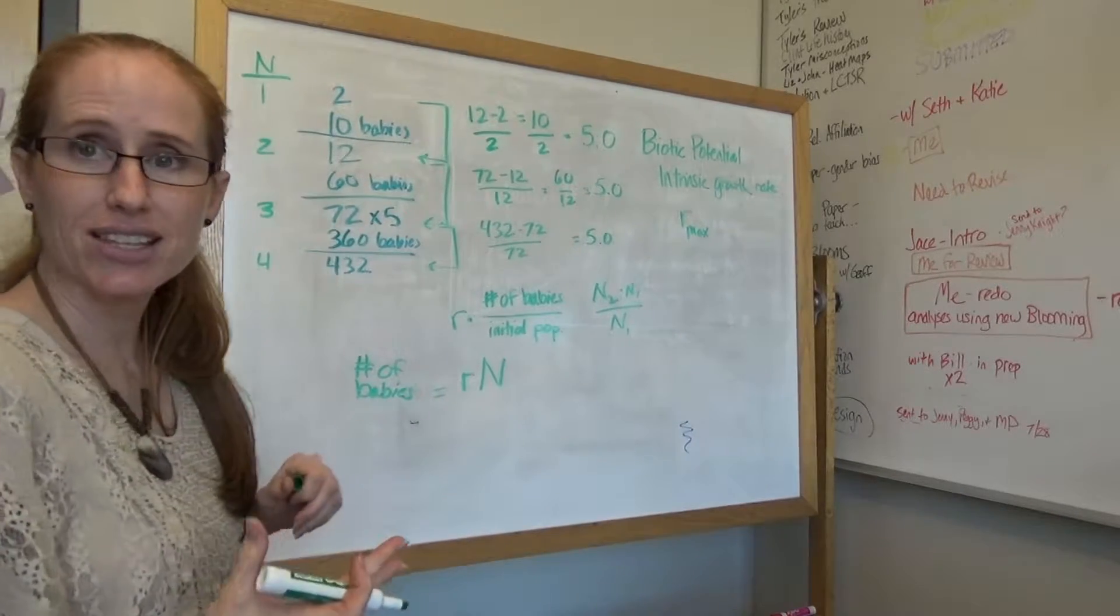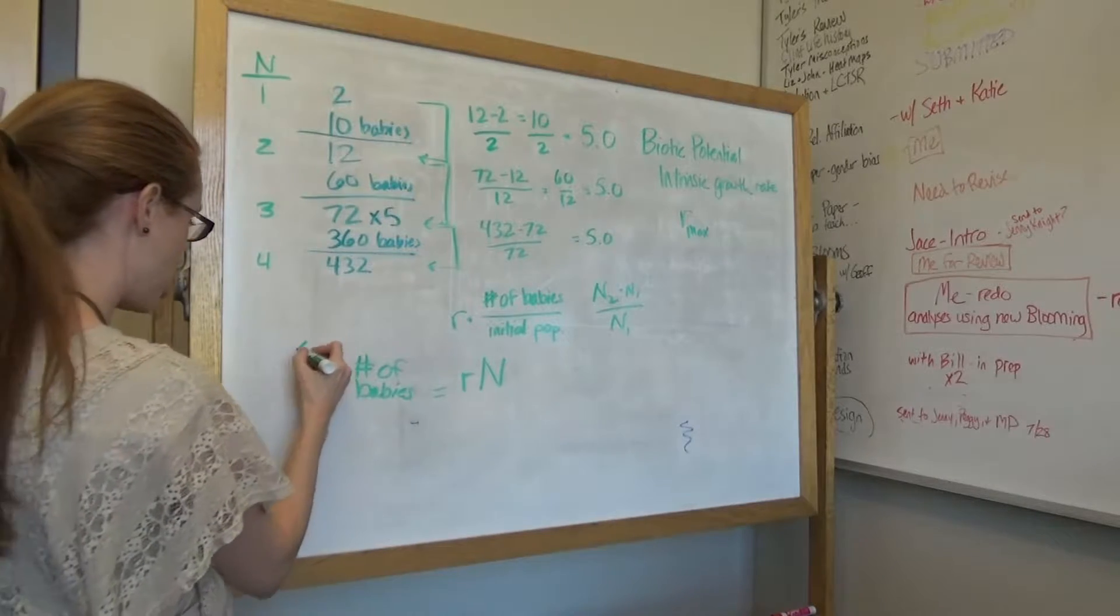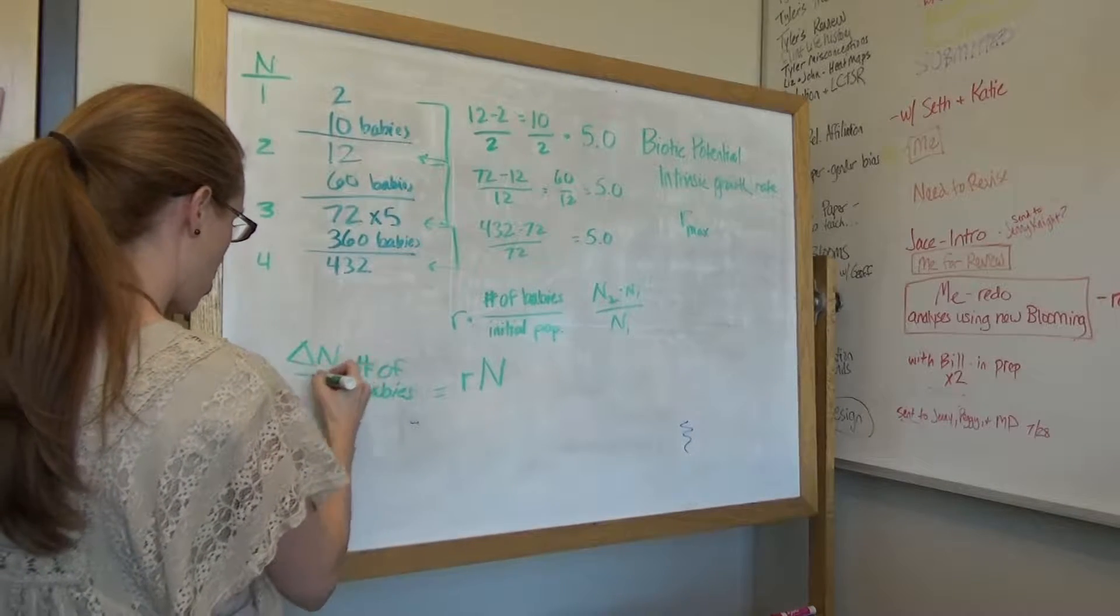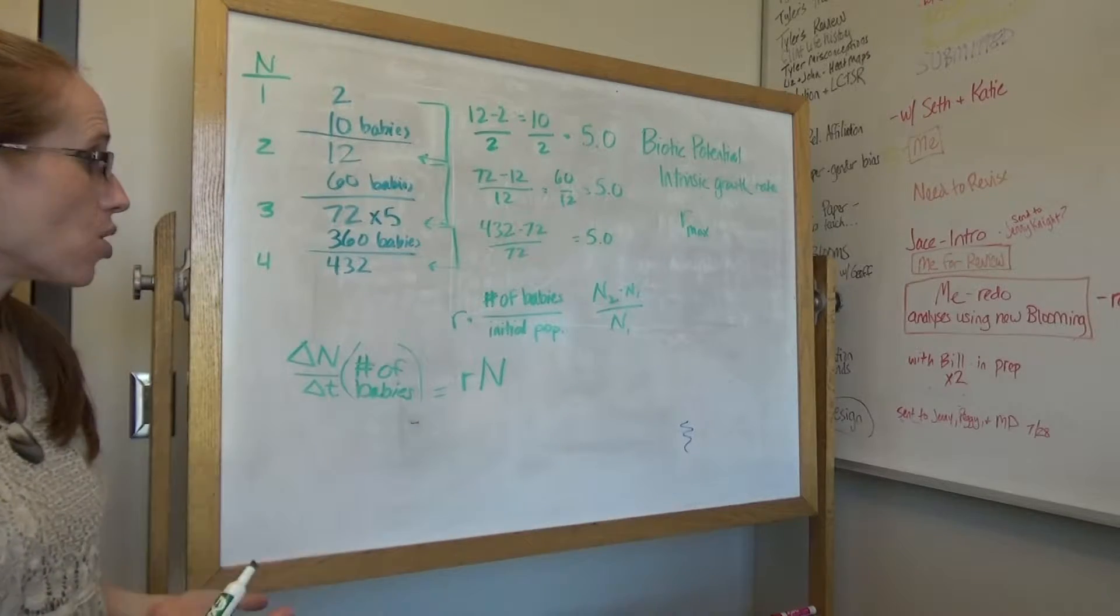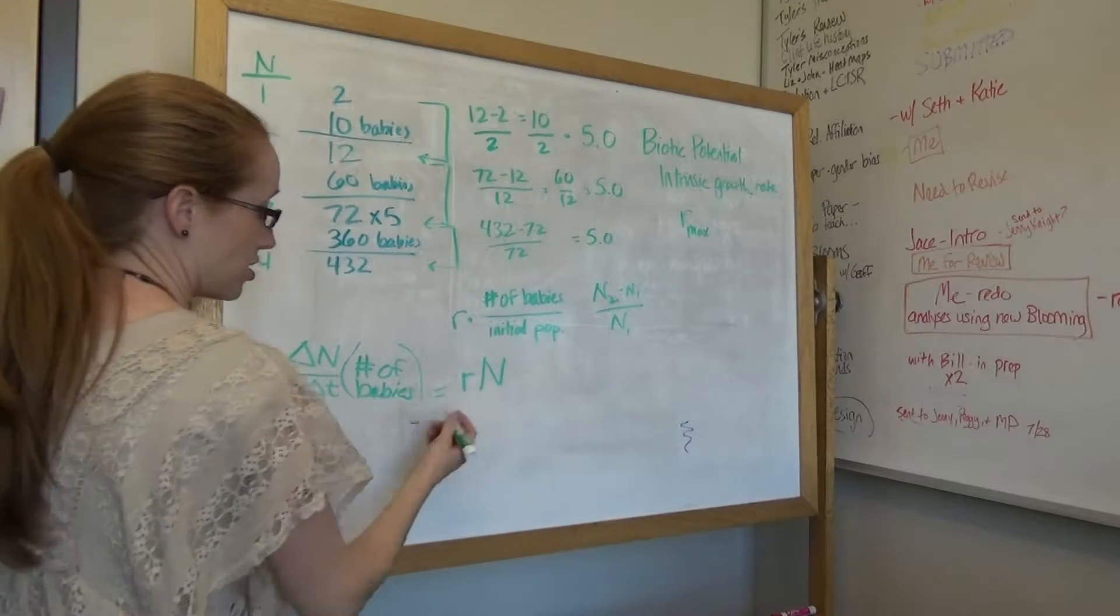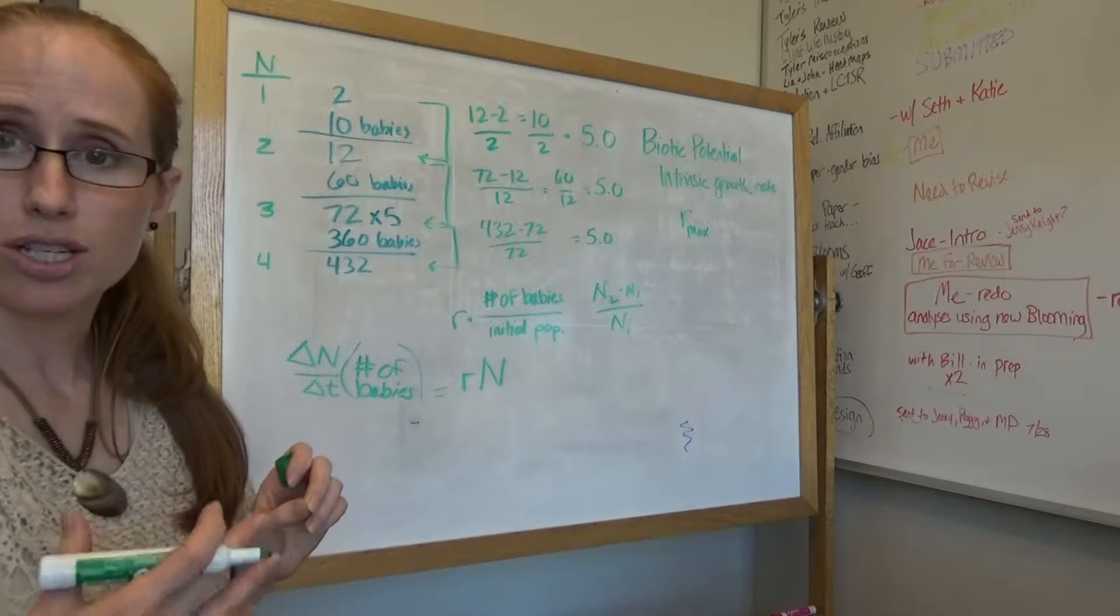Okay, and a fancy way to write number of babies is the change in the population size over the change in time. Okay, which actually is number of babies. Okay, so that is the way to write it. If you want to know the number of babies, you just take R times N.